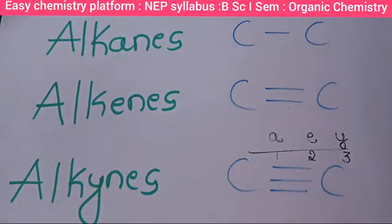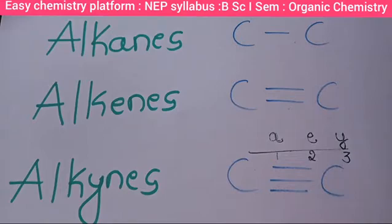Welcome back to my easy chemistry platform. Here I am going to discuss the most important concept belonging to organic chemistry — the IUPAC nomenclature system of organic compounds. But before going to that, let's know some basic concepts: how to represent a given formula, how to write the name of a given organic compound, and how to write the structure of an organic compound.